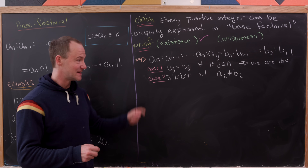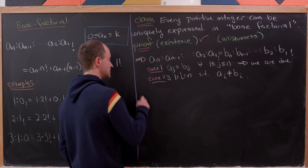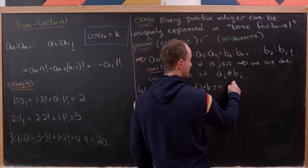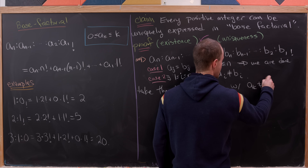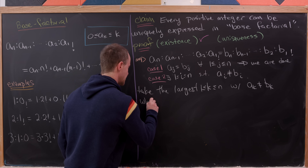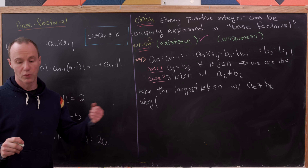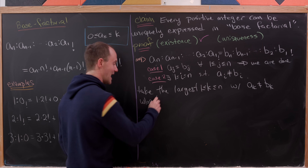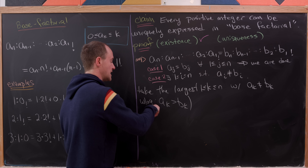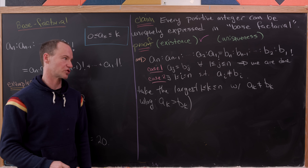So if there exists such an i, we can pick the largest — take the largest k between 1 and n with a_k not equal to b_k. We'll assume a_k is bigger than b_k; if they're not equal, one of them has to be larger, and we'll take a_k to be the larger one.